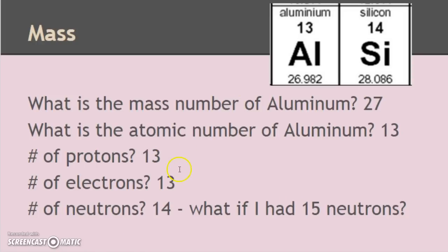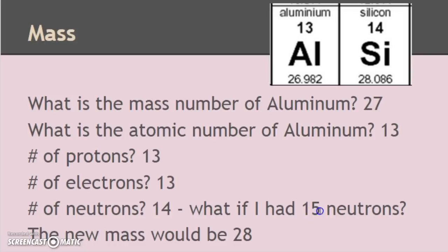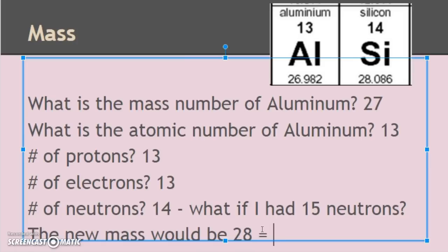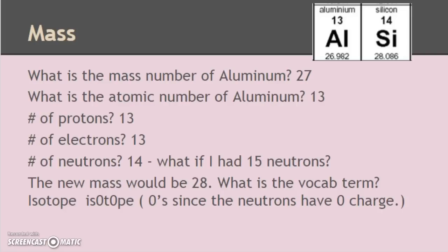Back to aluminum: 13 protons, 13 electrons, neutral, 14 neutrons. What if I had 15 neutrons instead? It would have a new mass: 15 plus 13 equals 28. The vocab word for that is isotope. Neutrons have zero charge, and when I change the number of neutrons I change the mass but not the element. So: if I change the neutrons, it's an isotope; if I change the electrons, it's an ion because now it has a positive or negative charge.